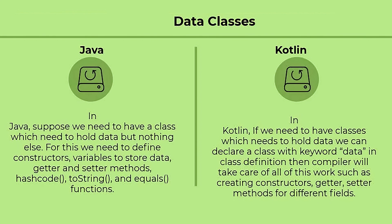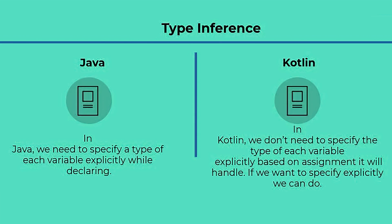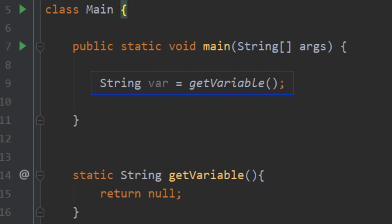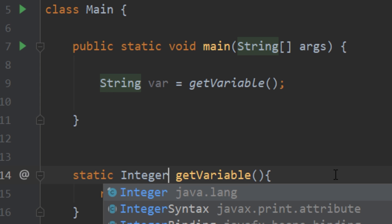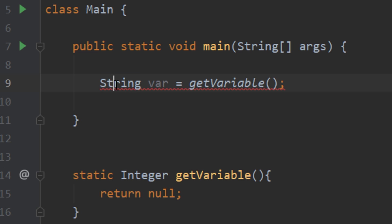Kotlin gives you the ability to have data classes. If you just have a class that needs to store data and nothing else, you simply declare a class with the keyword 'data' and the compiler takes care of everything — creating the constructors, getters, and setters — whereas in Java you would have to explicitly write all that code. Kotlin also has type inference. In Java, if you want to create an integer, you'd write 'int i = 10' or 'String s = "Sam"'. In Kotlin, you can simply write 'var i = 10' and the program is smart enough to know it's an integer. This is helpful when you have a variable set to the return value of a function — if you later change the return data type, you don't need to go back and change the variable, whereas in Java you'd have to update it manually.